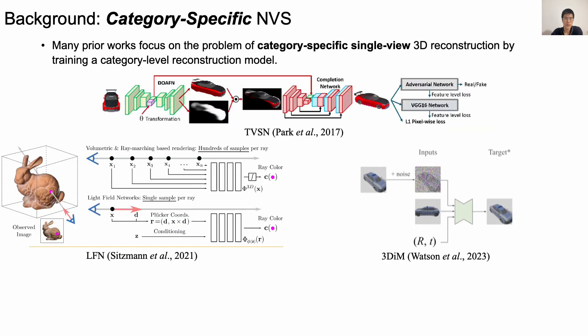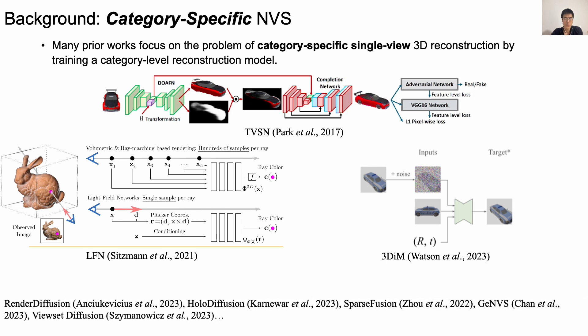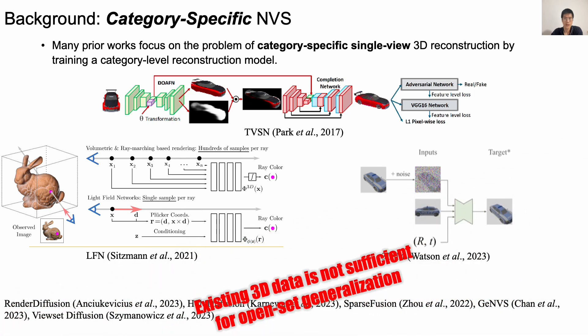Inspired by various generative networks, some works build auto-encoder architectures for specific categories. More recently, the diffusion model has been introduced into the 3D novel-view synthesis setting. Those follow-ups directly train the model from scratch using 3D datasets. However, existing 3D data is not sufficient for open-set generation.